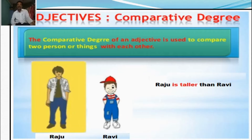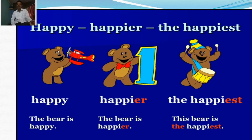More examples: Adjective — comparative degree — superlative degree. For example, Raju is taller than Ravi — here taller is the comparative form. Happy — happier — the happiest. Look at the slide: The bear is happy — positive degree, only one thing. The bear is happier — comparative degree, comparing two. This bear is the happiest — superlative degree.